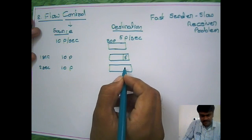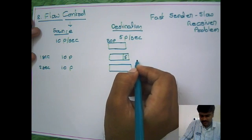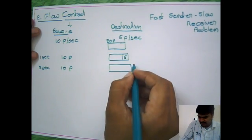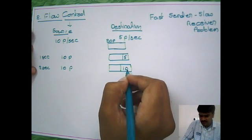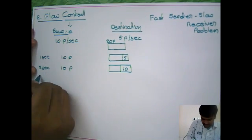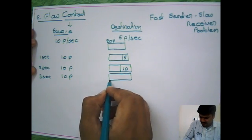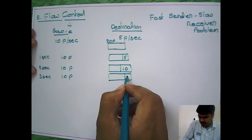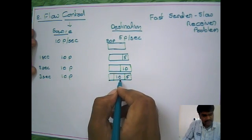In the second second, the destination processes the 5 packets buffered from the first second, while the 10 new packets are stored in the buffer. In the third second, 10 more packets are sent. The destination processes 5 packets from those, and the remaining 10 packets are buffered again.